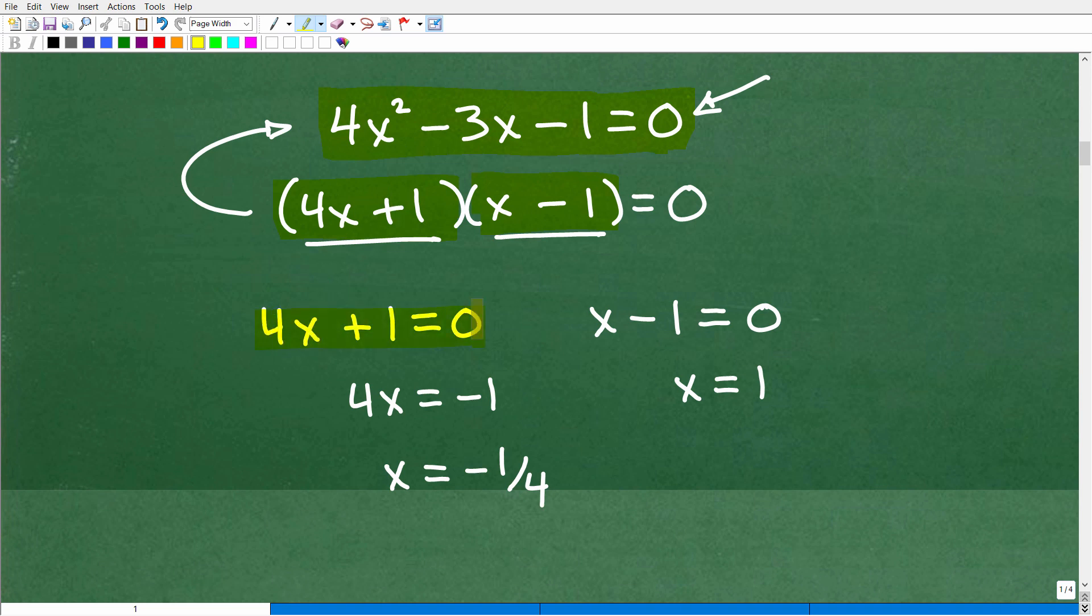Here we have this factor times this factor is equal to zero. This or this must be zero or both of them are zero. So we're going to set each factor equal to zero. 4x plus one, we're going to set that equal to zero, and x minus one is going to equal zero. When I solve for x here, x equals one. That's one solution. Then when I solve for x here, I have 4x equals negative one-fourth. When we're dealing with a quadratic equation, you're always going to have two solutions: one and negative one-fourth.